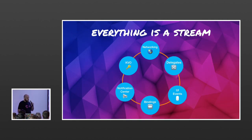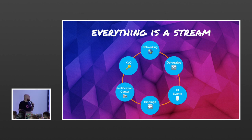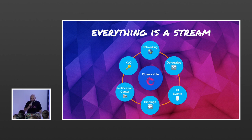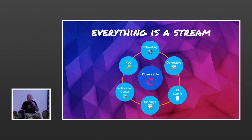The point of observables is to provide a singular API to unify asynchrony across your app. Networking, delegation, UI events, notification center — they can all be put under this umbrella of observable streams because they all happen over time. They can all be modeled as a stream of events or values over time. But how do we actually use these events?